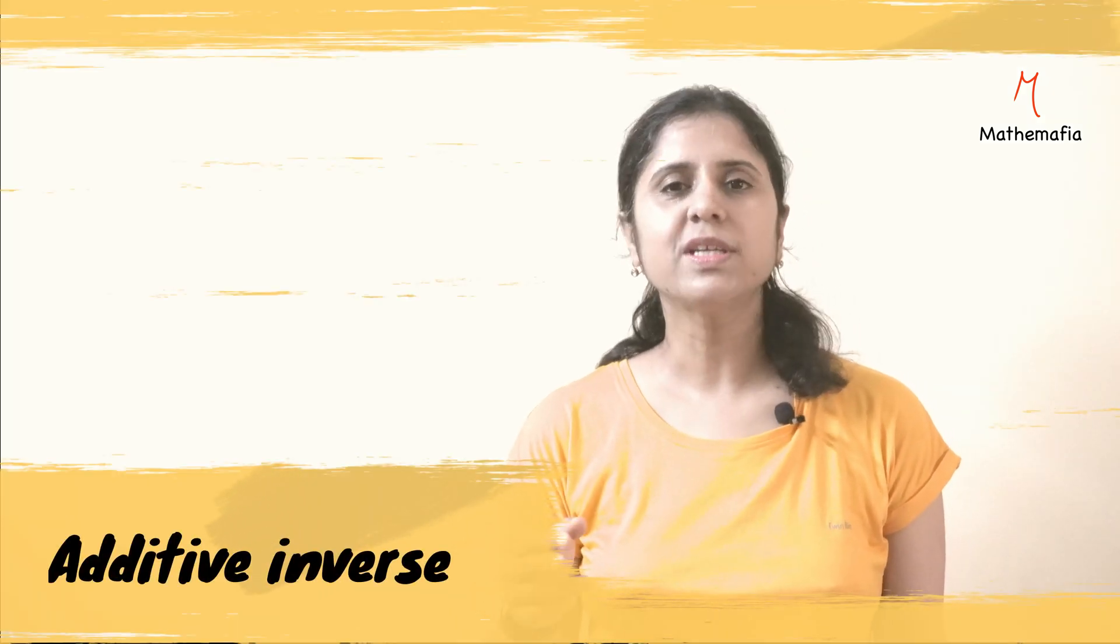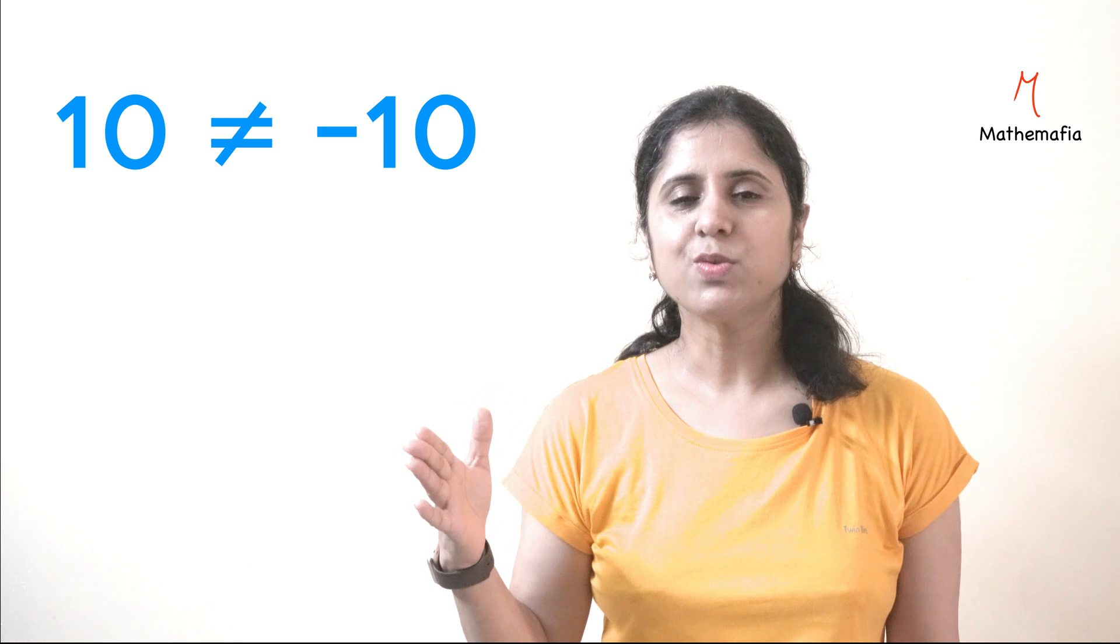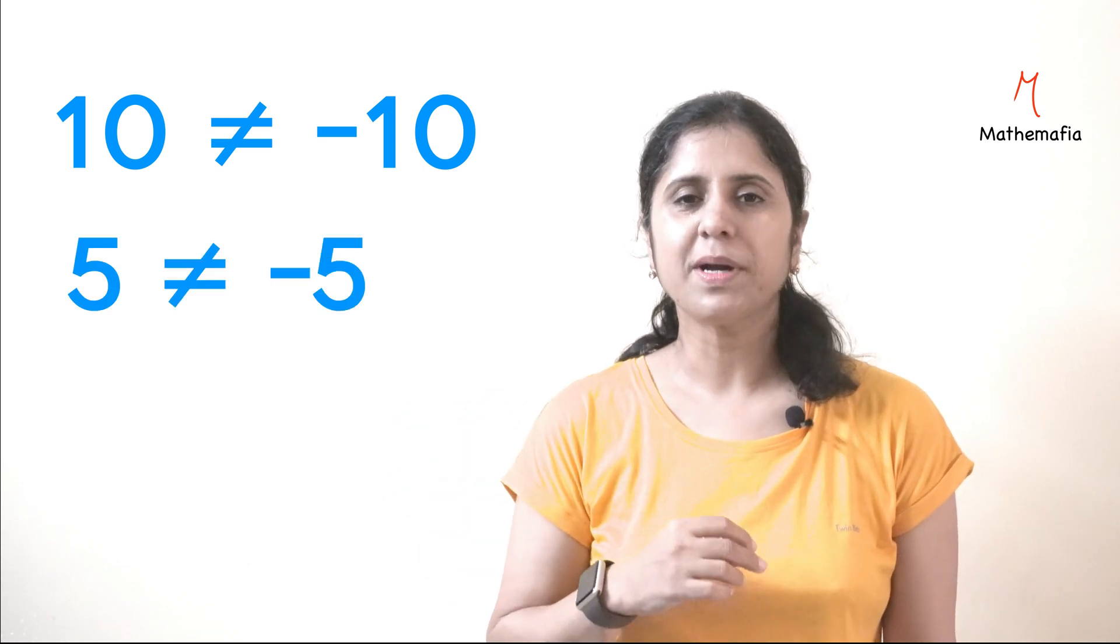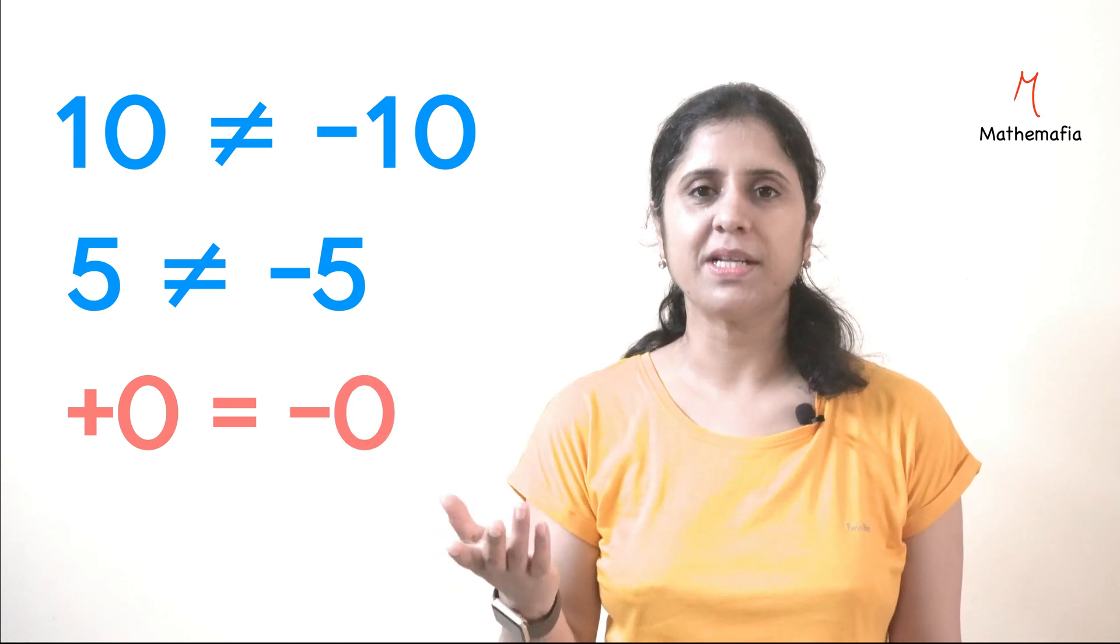Secondly, let us understand it using the additive inverse. The additive inverse of a non-zero number is never equal to that number. For example, 10 is not equal to -10, 5 is not equal to -5, but for 0, +0 is equal to -0.